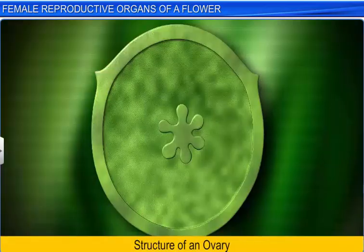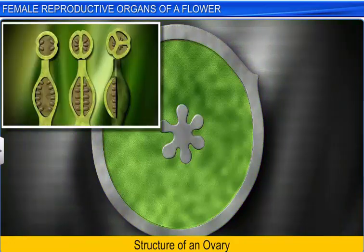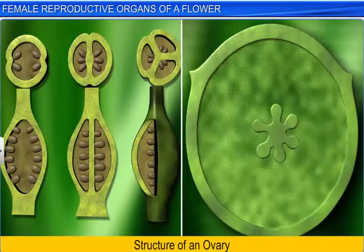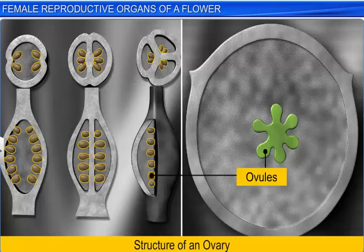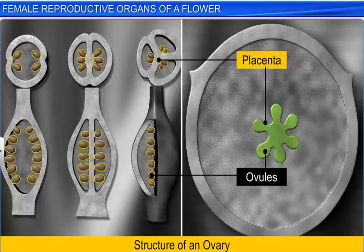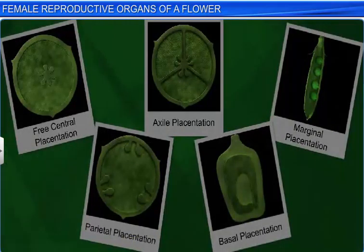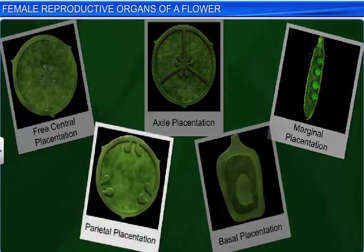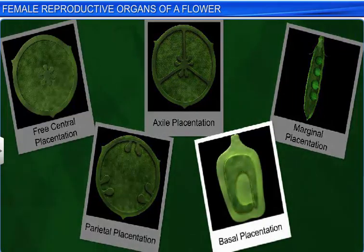Morphological studies of the ovary have revealed that it contains one or more cavities called locules or ovarian cavities, that are surrounded by an ovary wall. Within the locule, you will find ovules or megasporangia, attached to the ovary wall in a region called the placenta. These ovules may be arranged in free central, axial, marginal, parietal, or basal placentation.